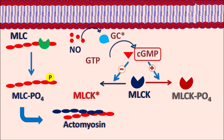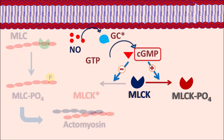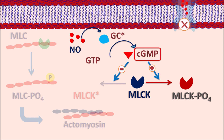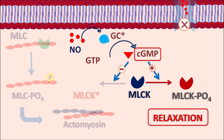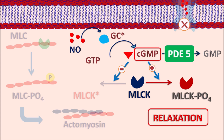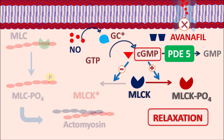Cyclic GMP also blocks the conversion of MLCK into its active form, reducing the contractile mechanism. Additionally, cyclic GMP inactivates inward calcium channels, producing significant relaxation of smooth muscle. In this way, nitric oxide produces relaxation of the corpus cavernosum. The action of cyclic GMP is terminated by phosphodiesterase type 5 enzyme, which converts cyclic GMP into GMP. In patients with erectile dysfunction, cyclic GMP levels are insufficient to produce relaxation, so erection cannot take place. Avanafil selectively inhibits phosphodiesterase type 5, thereby increasing cyclic GMP levels, promoting relaxation, and ultimately producing erection.